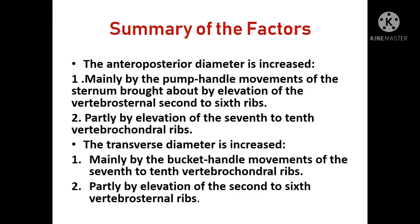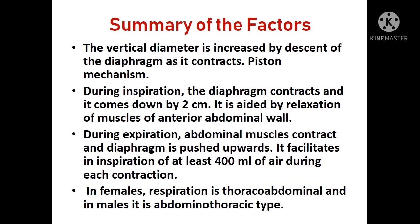The vertical diameter is increased by the piston movement of the thoracoabdominal diaphragm. In summary, the anteroposterior diameter is increased by the pump handle movement of the sternum, brought about by elevation of the vertebrosternal ribs (second to sixth) and partly by elevation of the seventh to tenth ribs. The transverse diameter is increased by the bucket handle movement of the vertebrochondral ribs, and partly by the vertebrosternal ribs. The vertical diameter is increased by the descent of the diaphragm as it contracts — this is called the piston movement.